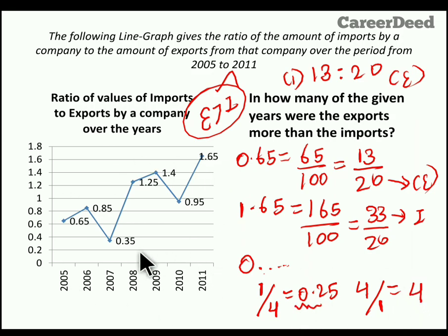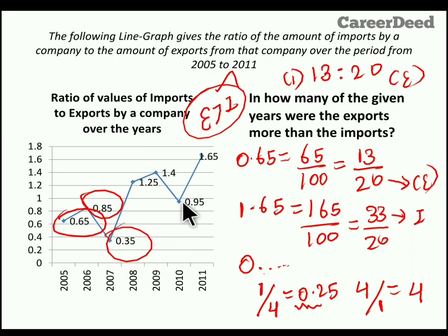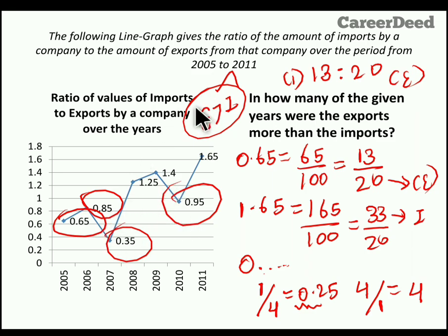Now look at the numbers starting with 0 point something. In 2005 it's 0.65, in 2006 it's 0.85, in 2007 it's 0.35, and in 2010 it's 0.95. For the remaining 3 years, the value starts with 1, meaning import is greater than export. But we need export greater than import. So in 4 years, export is greater than import. The answer for the first question is 4 years.